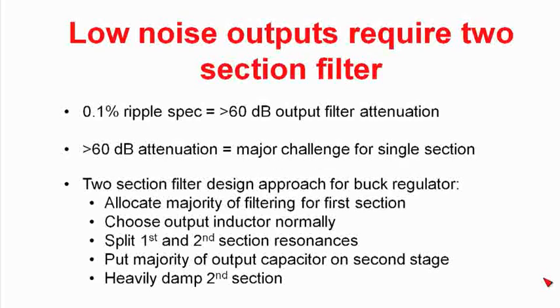And there's several major issues in dealing with a two-section filter. One of the big ones is that you have a potential for 360 degrees of phase shift in your filter, and that's going to create quite an issue for your control loop. So what I've found that works in designing a two-section filter is to take this approach. I'll allocate the majority of my filtering to the first section. I'll normally choose my output inductance value. And what that normally means is I'm usually working with a buck regulator on these, and I'll choose the peak-to-peak ripple current in the output inductor to be 20% or 30% of the DC current.